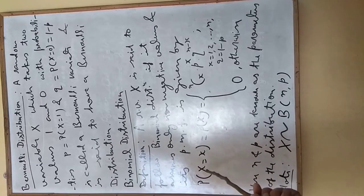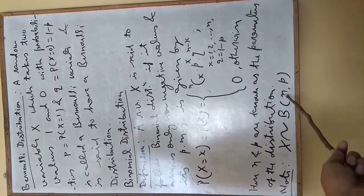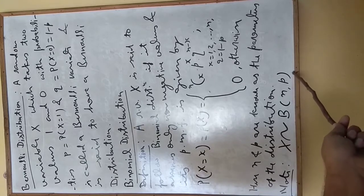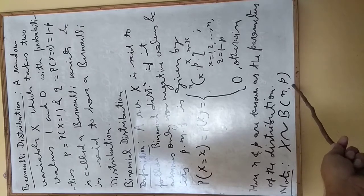We write this variable X as: X follows binomial distribution with parameters n and p, where n is finite and p is the probability of success.